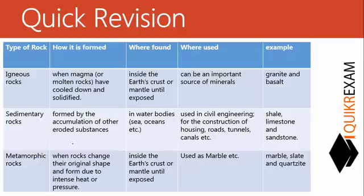Let's have a quick revision. Igneous rock is formed when magma cools down and solidifies under Earth's surface. Sedimentary rock is formed due to accumulation of eroded substances. Metamorphic rock is formed when rocks change their original shape due to intense heat or pressure. Igneous rock is found under Earth's crust; sedimentary rock is found under water bodies; metamorphic rock is found under Earth's surface until it is exposed. Igneous rock is an important source of minerals; sedimentary rock is used in civil engineering for construction of houses, roads, and tunnels.